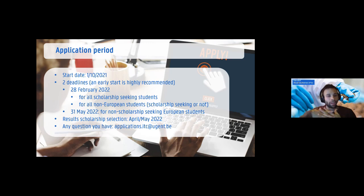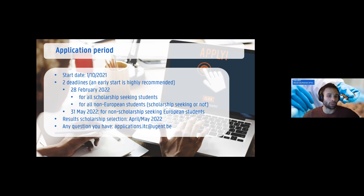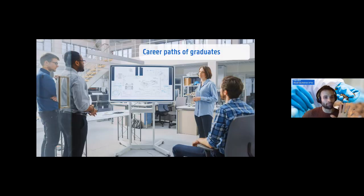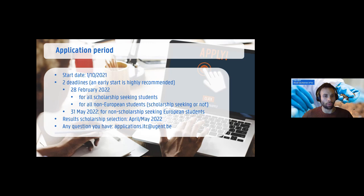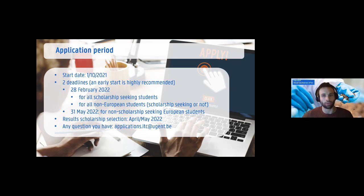If you have any questions about the procedure, exact deadlines, or which category you fall into as an EU or non-EU student, you can always ask at applications.itc@ugent.be. You'll also have a link to our website and the program websites where you can check all details.